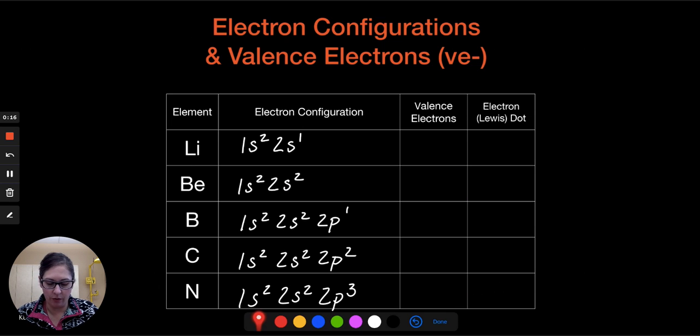And so valence electrons, or VE, are the outermost electrons, and those are the ones that are going to be involved in bonding.